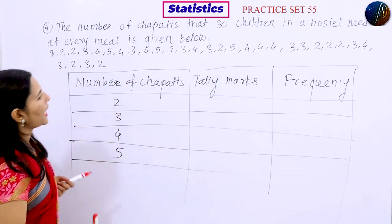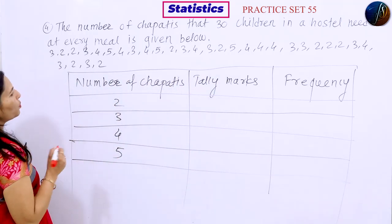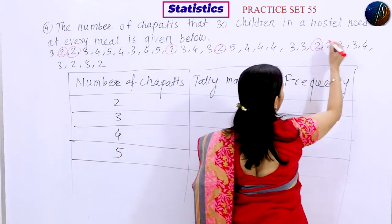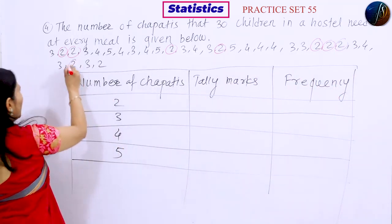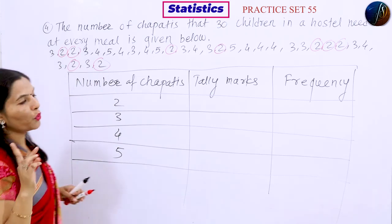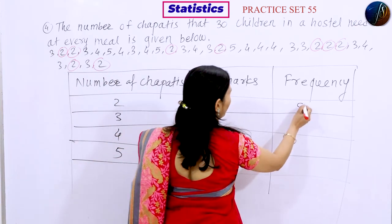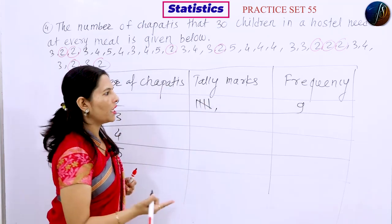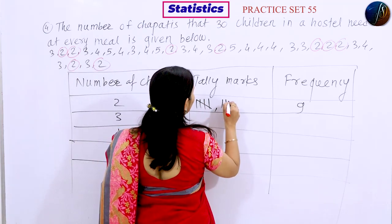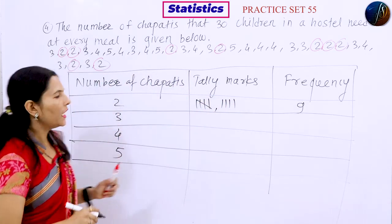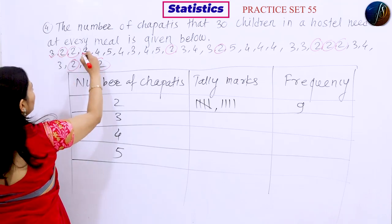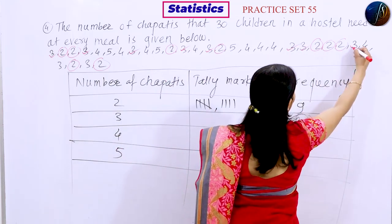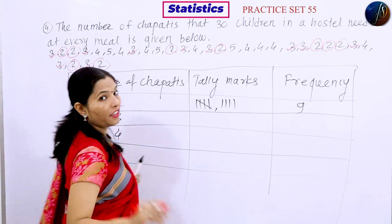We are ready to do the counting. We count: 1, 2, 3, 4, 5, 6, 7, 8, and 9 — so the frequency for one value is 9. Then 1, 2, 3, 4, and 5 gives 5, and 5 plus 4 equals 9. For 3 chapatis: 1, 2, 3, 4, 5, 6, 7, 8, 9, and 10 — so 10 students eat 3 chapatis, giving 5 plus 5 equals 10.